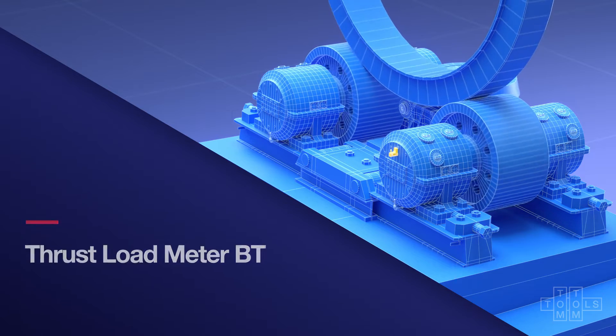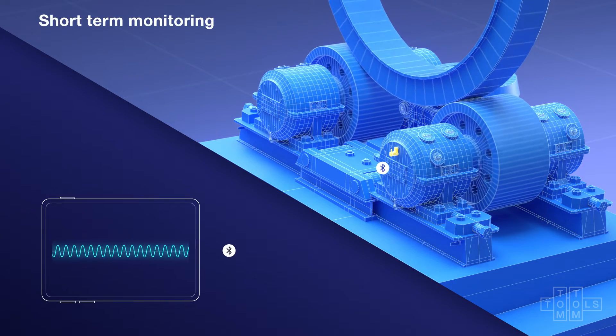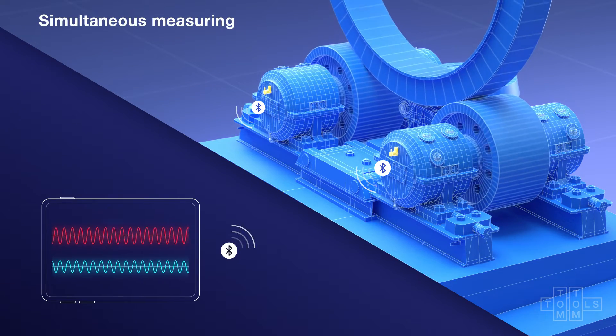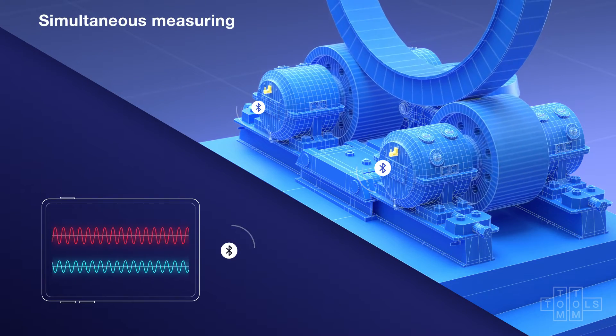It is attached by magnets and sends the values to a PC using Bluetooth. Typically two, but up to six, thrust load meters can be connected to the PC and measure simultaneously.